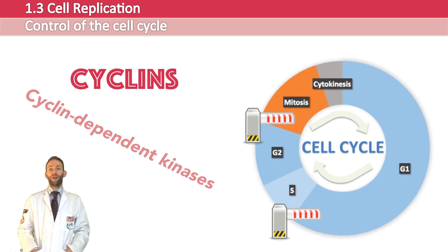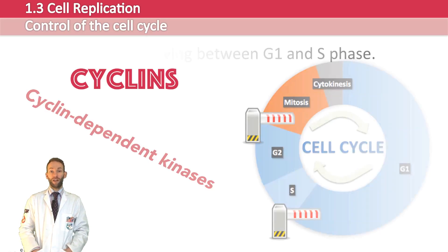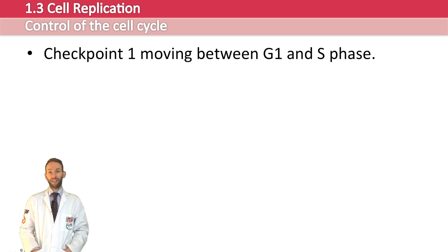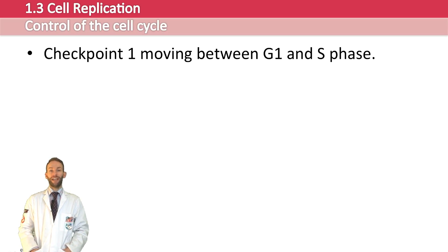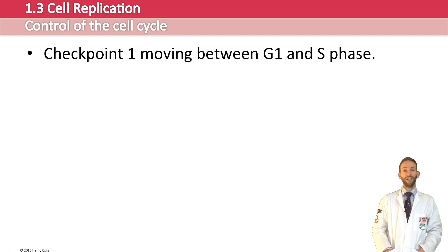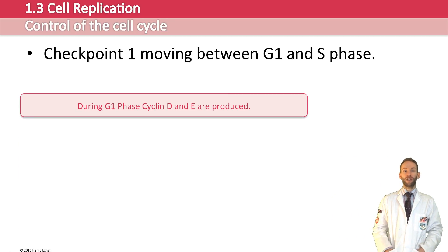Here is an example of how this works. Let's look at checkpoint 1, as the cell cycle moves between the G1 and the S phase. During G1 phase, two cyclins are produced: one called cyclin D and another one called cyclin E.